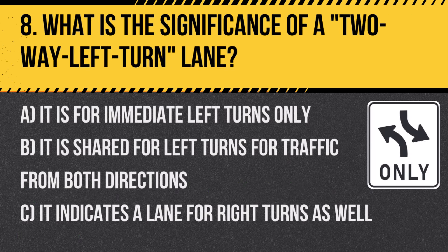Question 8: What is the significance of a two-way left turn lane? A. It is for immediate left turns only. B. It is shared for left turns for traffic from both directions. C. It indicates a lane for right turns as well. Answer: B. It is shared for left turns for traffic from both directions. This lane allows vehicles from both directions to make left turns.